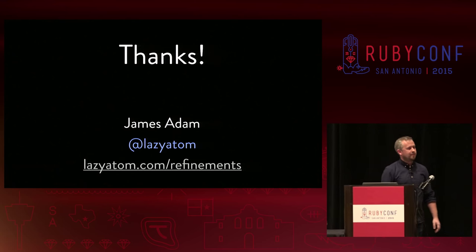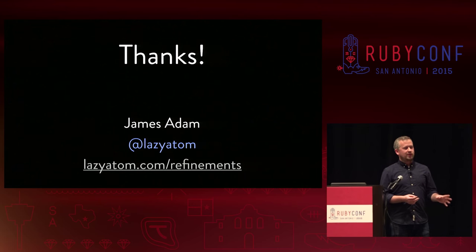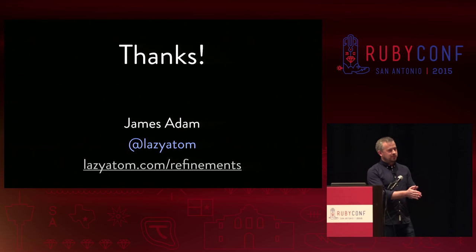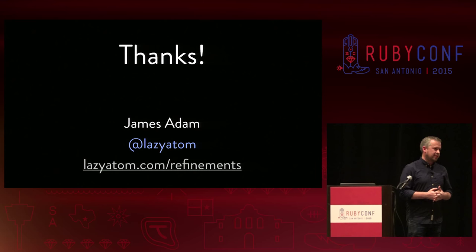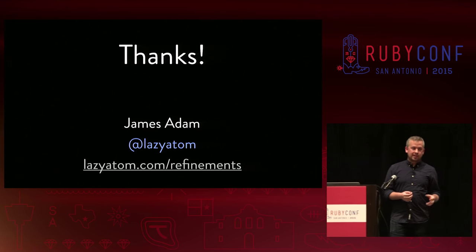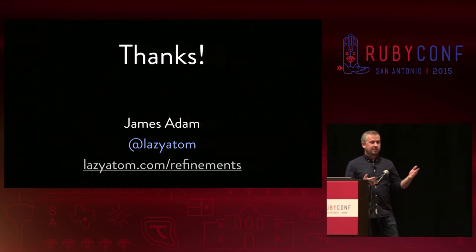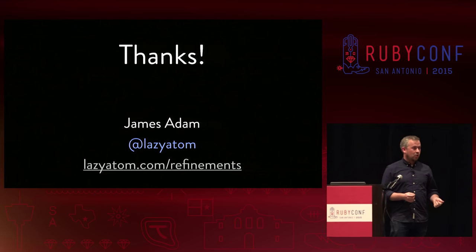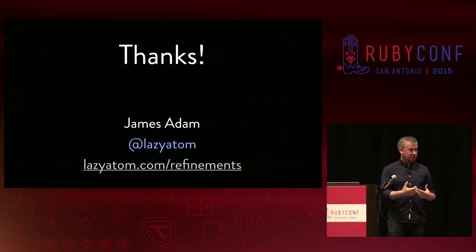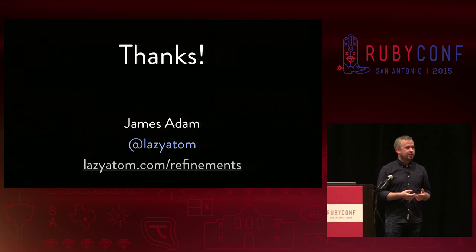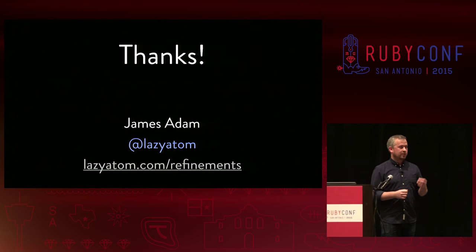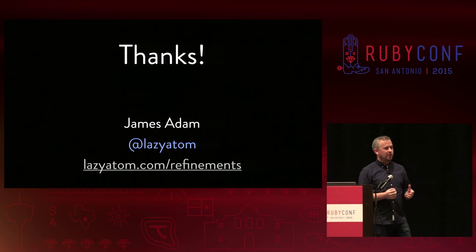Does anybody have any questions? The question was about the history of refinements. They were inspired by a concept called class boxing from a different language, which effectively does a similar thing, and originally proposed as a patch at RubyConf 2010 — literally about ten years ago. The inspiration was to solve monkeypatching, and I imagine that was because Rails was really becoming popular at that point and people were encountering issues with monkeypatching. The camelize example actually does come from a real experience that Yehuda Katz blogged about. There are 278 comments on the Ruby Tracker issue that introduced refinements, over a period of two years.